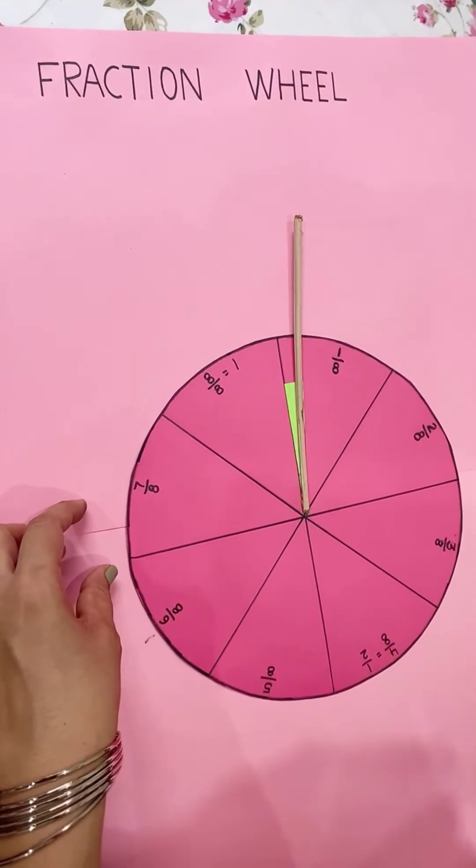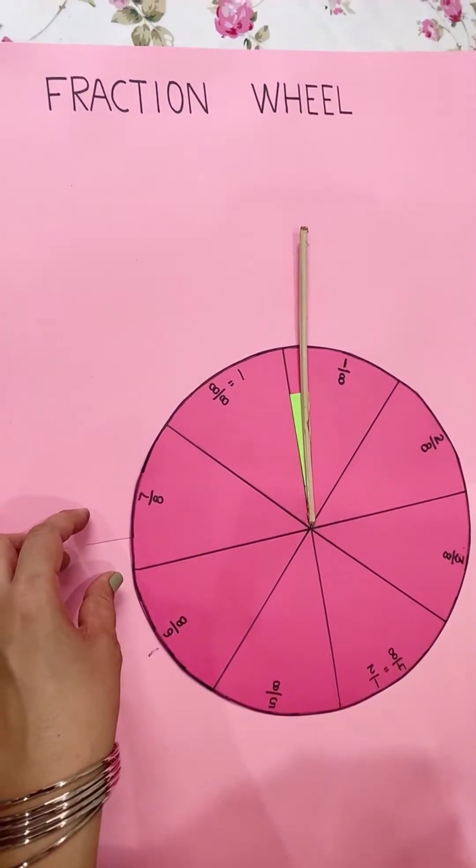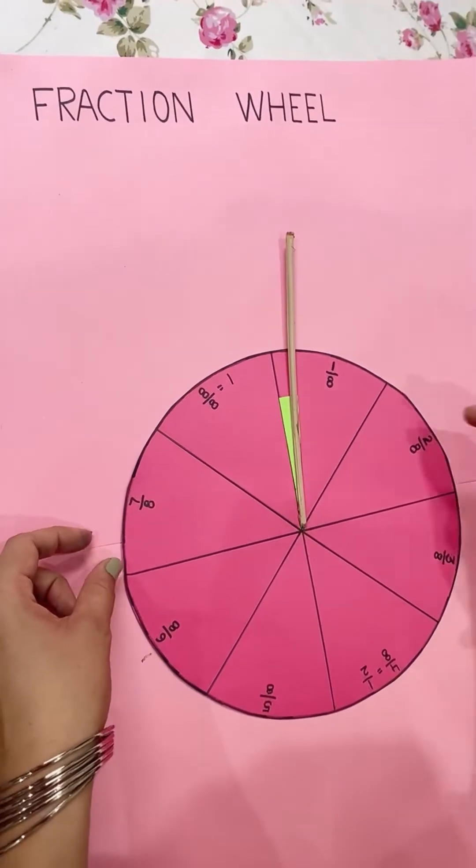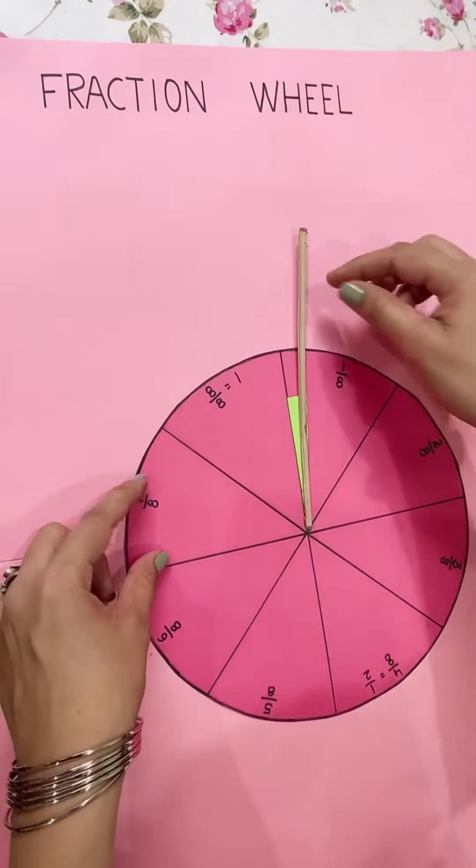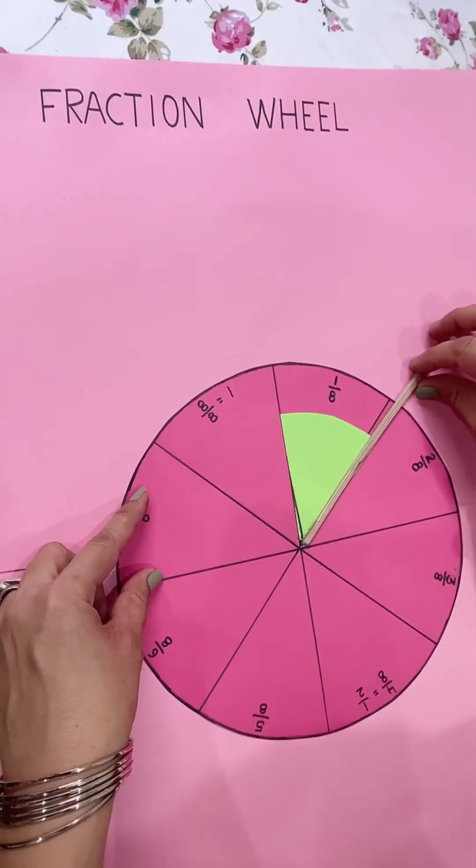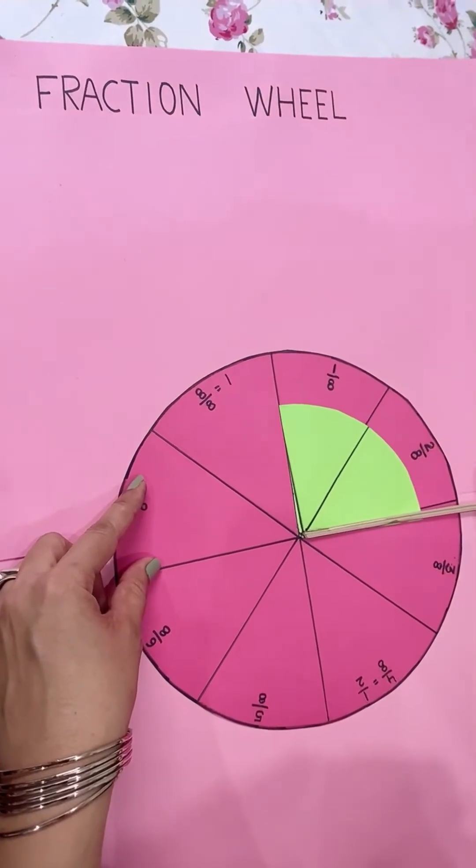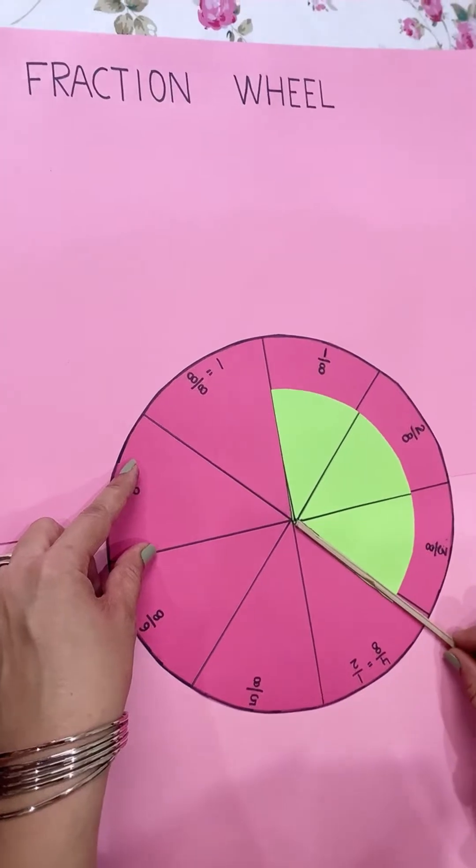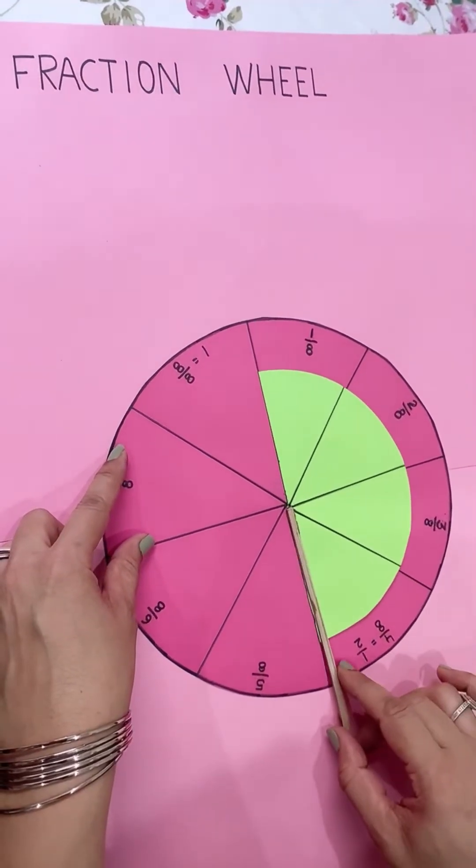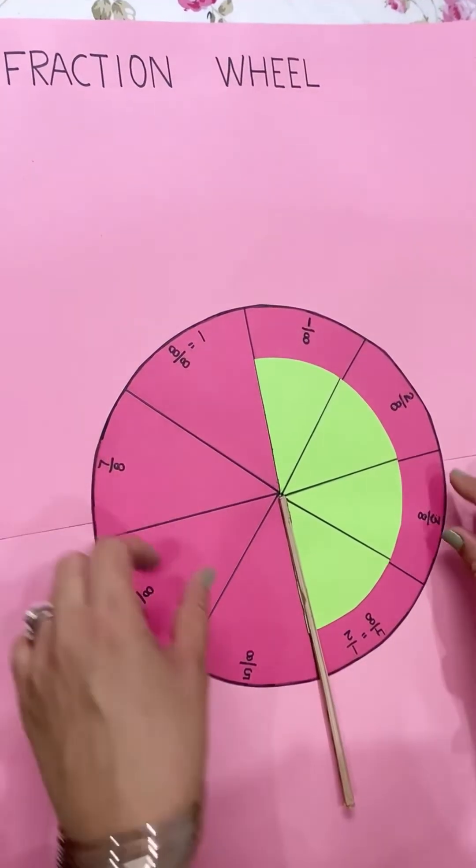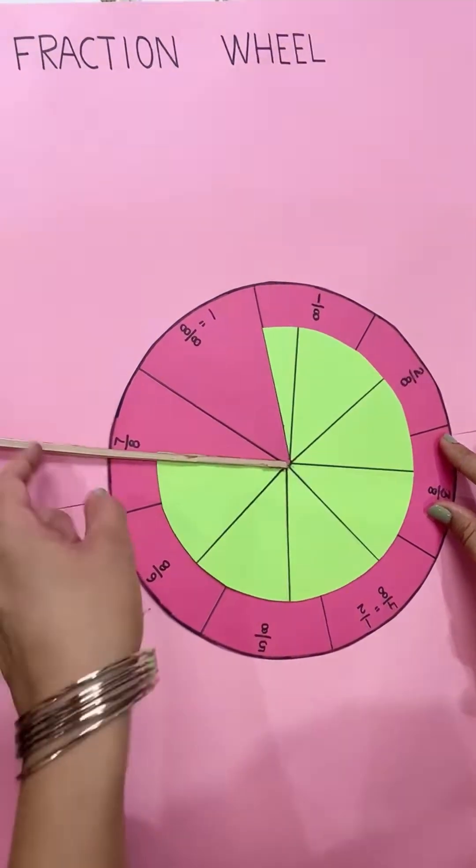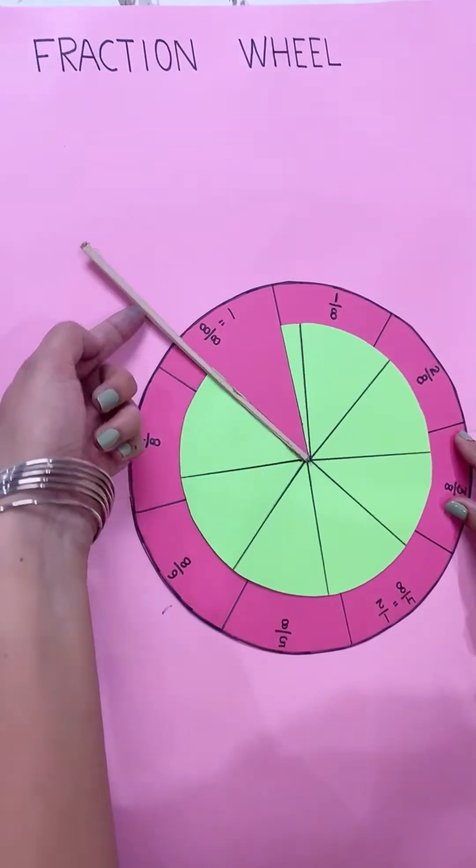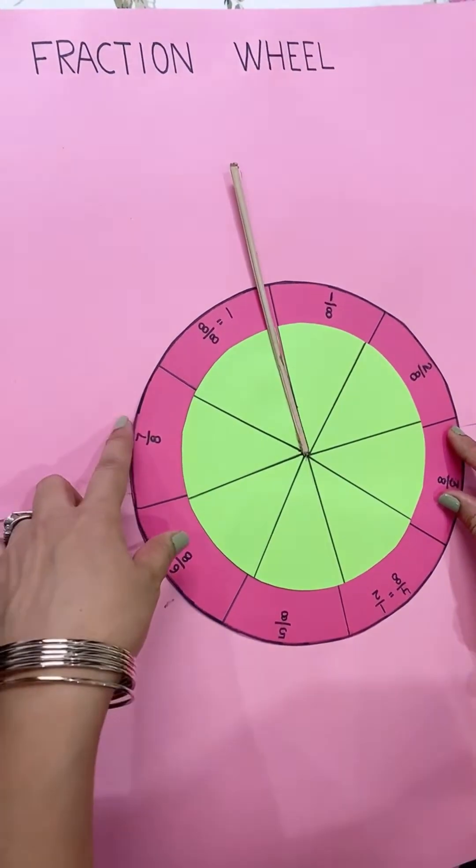In this video we will learn to make a fraction wheel. A fraction is a part of a whole. This circle is divided into eight equal parts: this part is 1/8, 2/8, 3/8, 4/8 or 1/2, 5/8, 6/8, 7/8, 8/8 or 1.